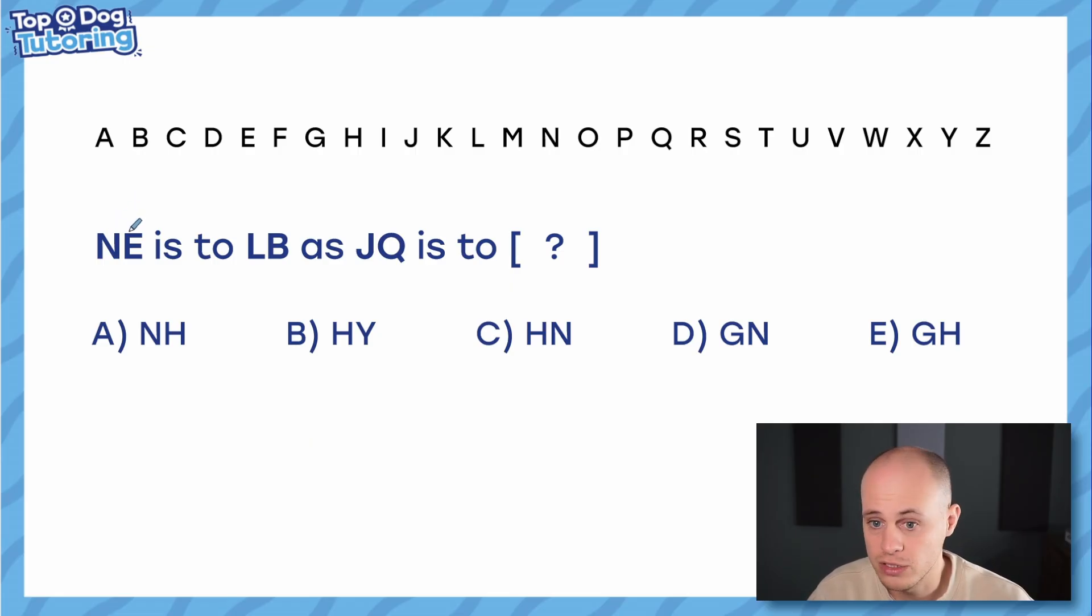It says NE is to LB as JQ is to something. What we're trying to do here is understand the link between the complete pair that we're given, and then when we know that link we can apply it to the start of our next pair JQ and hopefully come out with a two letter code ourselves. It's very much down to the jumps on the alphabet between or the distance between the letters, and what we need to do - the main strategy here - is isolating the first letter with the second letter.